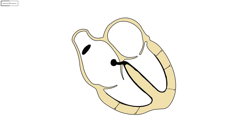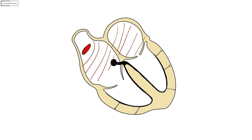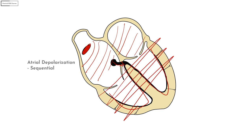The second concept is the difference between atrial and ventricular depolarization. Normally the SA node spontaneously depolarizes and produces an impulse. Because the SA node is located in the right atrium, the right atrium depolarizes first followed by the left atrium — this is sequential depolarization. In contrast, when the impulse leaves the AV node and enters the bundle of His, it almost instantaneously reaches both sides of the ventricle, resulting in a simultaneous depolarization of both ventricles.